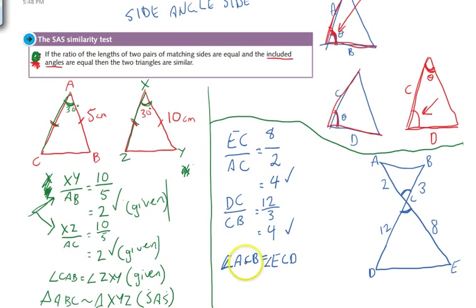And the reason we can say that those two angles are equal is because of this. Angle ACB is vertically opposite. Because those angles are vertically opposite, like a pair of scissors, they're going to be equal.